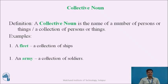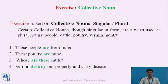Collective noun: a collective noun is the name of a number or collection of persons or things. For example, 'a fleet' is a collection of ships, and 'an army' is a collection of soldiers. Certain collective nouns, though singular in form, are always used as plural nouns — for example: people, cattle, poultry, women, gentry.